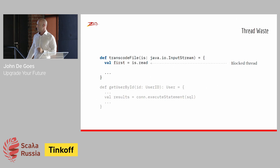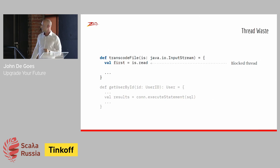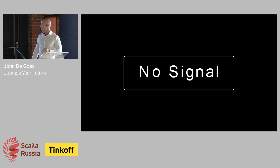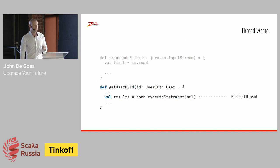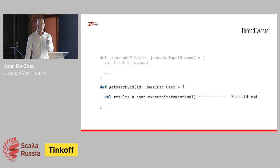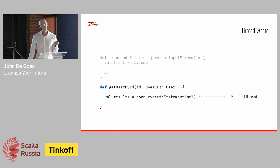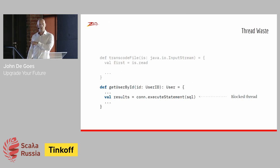We have a lot of blocking code in our Scala and Java codebases, and the reason is actually a legacy. Code like reading from an input stream or executing a SQL query against a database just sits around blocking the thread for an indefinite amount of time. Both of these examples put a thread to sleep, and while that thread is sleeping it's still consuming resources — pre-allocated stack size, JVM-level resources, operating system-level resources. This is blocking code.